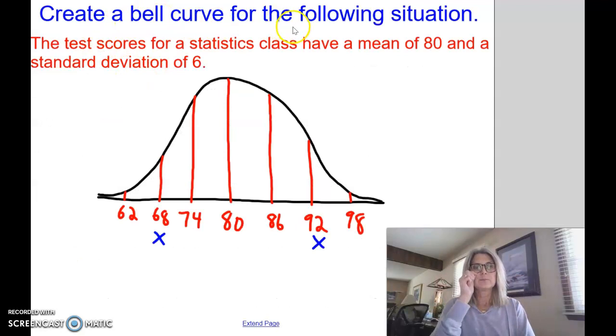The bell curve, here's an example. We have a bell curve. Let's say that the mean is, here's our bar X, 80. And our standard deviation is six. So I take 80 plus six, plus six more is 92, plus six more is 98. Then let's go back to the 80 and subtract six. 80 minus six, 74. 74 minus six, 68. 68 minus six, 62.